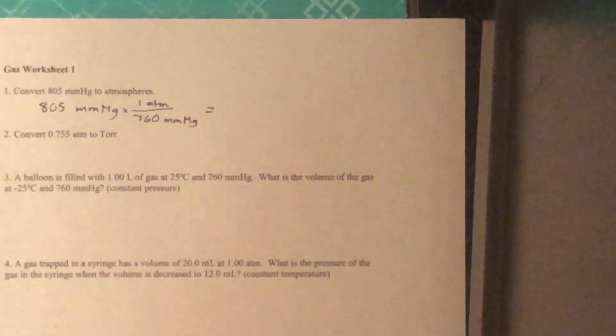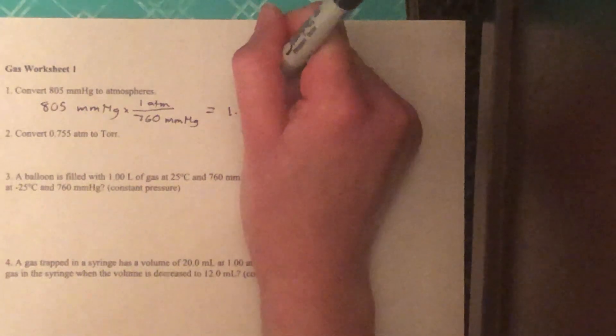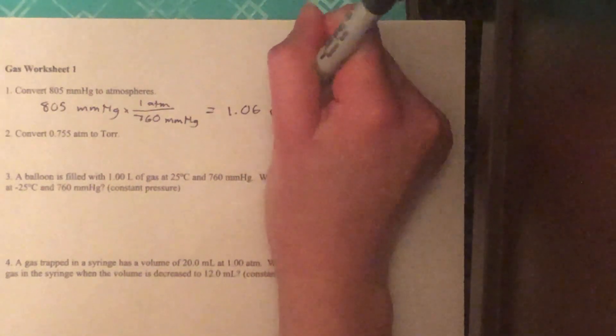We're going to multiply everything on the top, divide by everything on the bottom. And that will give us an answer of 1.06 atmospheres.